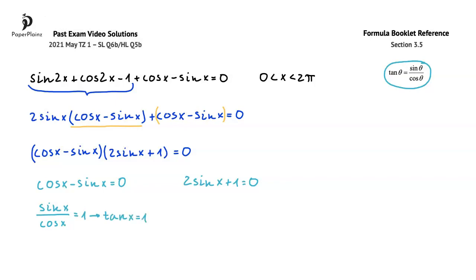To find the possible values of x here, we'll consider the unit circle. Tan x = 1 where sin x equals cos x. The two such positions on the unit circle are here and here. We are looking for a solution on the interval where x is between 0 and 2π.